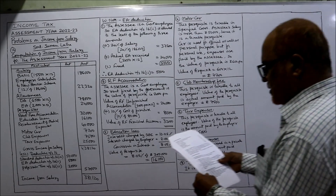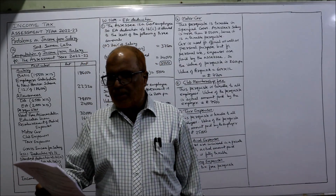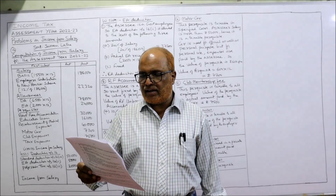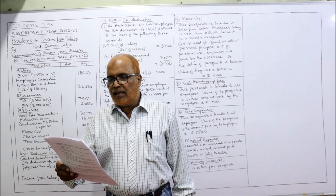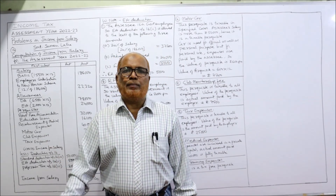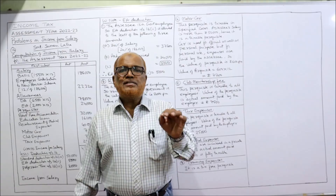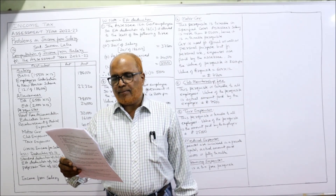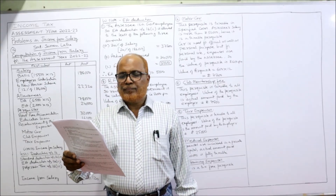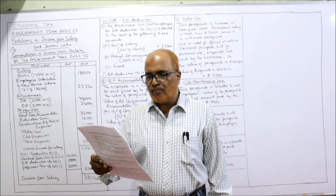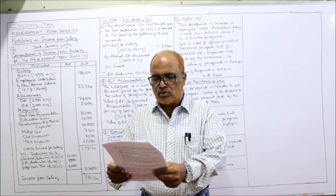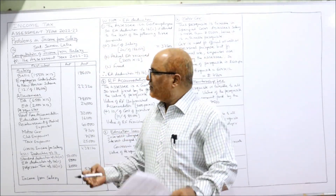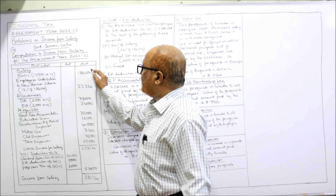Now, 12th problem: Srimathi Suman Lata is working since 1-4-2011 as an auditor in AG office, a central government department — that means she is a government employee. Compute income from salary. Basic pay is ₹15,500 per month. DA is ₹6,500 per month. We will take them one by one. Basic pay: 15,500 × 12 = ₹1,86,000. DA: 6,500 × 12 = ₹78,000.